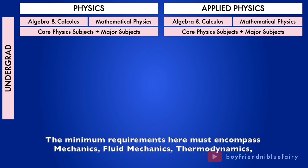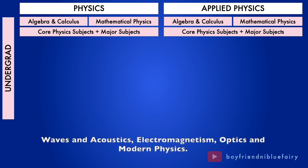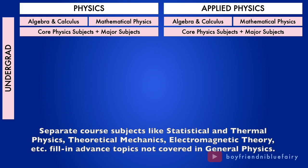The minimum requirements here must include physics and compass mechanics, fluid mechanics, thermodynamics, waves and acoustics, electromagnetism, optics, and modern physics. Separate core subjects like statistical and thermal physics, theoretical mechanics, electromagnetic theory, etc. fill in advanced topics not covered in general physics.